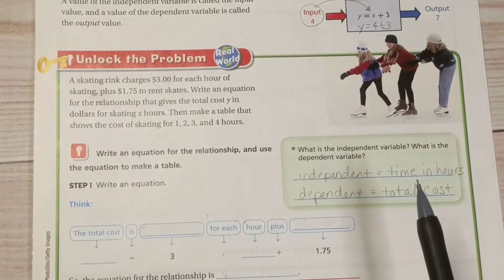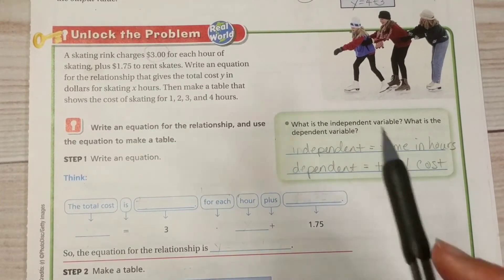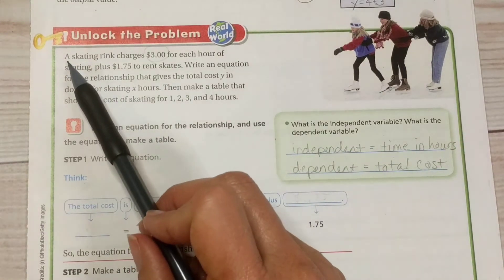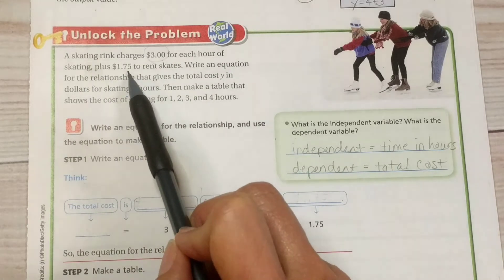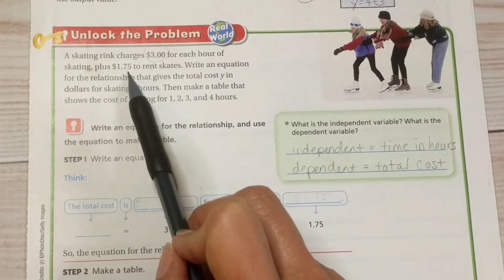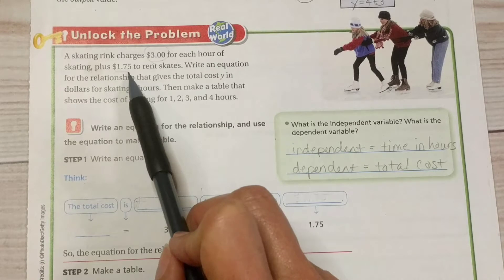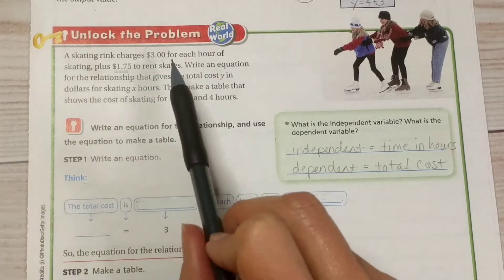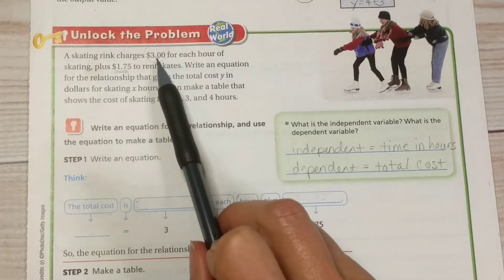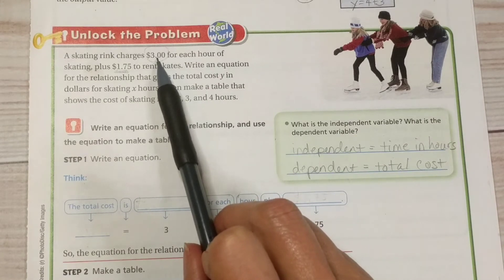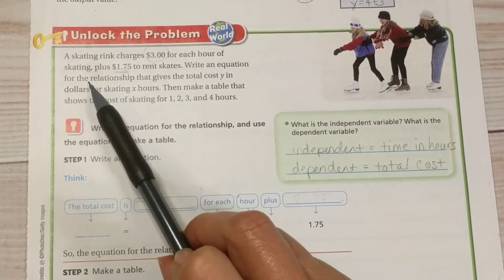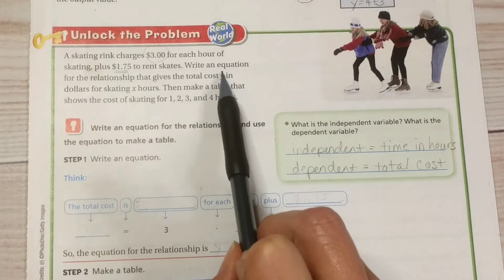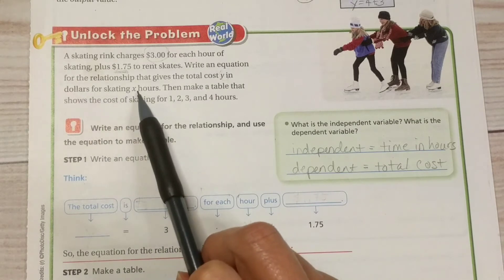All right, let's go ahead and work on our first example. A skating rink charges $3 for each hour of skating plus $1.75 to rent skates. This $1.75 is a one-time fee. It's not going to change. But this changes depending on how long we skate. Write an equation for the relationship that gives the total cost, y, in dollars for skating x hours. We don't know yet how long we're going to skate.